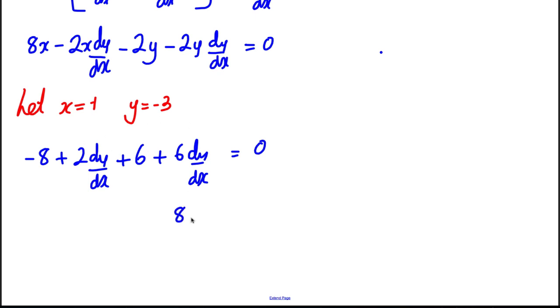So how many dy/dx's do we have? We have 8 dy/dx, and -8 plus 6 is -2. Add 2 to both sides, so I'd have equal 2, and dy/dx is therefore 2 over 8, which is 1/4.